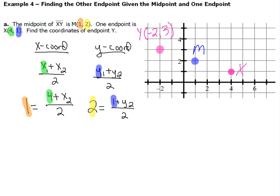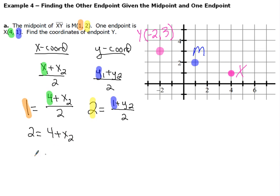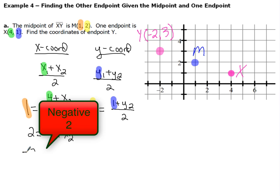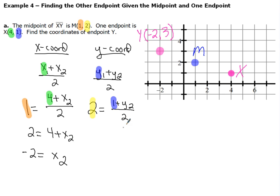Once you take a look at that, now all we have to do is make sure we do our arithmetic correctly. On the left side, when I'm working with my x-coordinate, I multiply both sides by 2 and get 2 equals 4 plus x2. When you subtract 4 from both sides, you get negative 2 for your second x-coordinate. When I go to work and find the coordinates for y2, I multiply both sides by 2 and end up with 4 equals 1 plus y2. Subtracting 1, you end up with 3. Now I've got to put both of those together and write my coordinate pair, making sure to take my time and write it correctly.